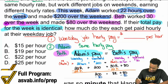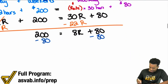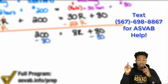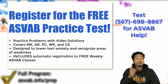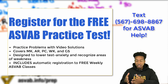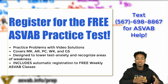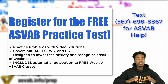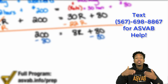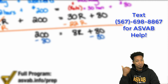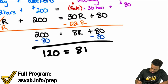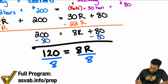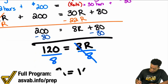Now I can go ahead and subtract 80 from both sides, giving me some more room. Remember, acing the ASVAB is not just about watching me do it — you need to practice as well. Watch, practice, and master the material. The best way to do that is to start with my free practice test because it comes with video solutions. Try it out yourself, see your mistakes, and keep raising your score. It's completely free — click the link. Let's get back to the problem. So right there, we're going to have 120 = 8R. And then lastly, we divide both sides by 8, giving us R = 15 bucks an hour.